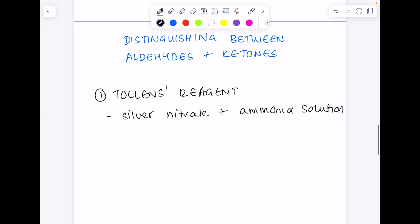So Tollens reagent is a mixture containing silver nitrate and ammonia solution. Now, what's actually happening with the Tollens test is that the aldehyde, this is the chemistry of what's happening, is oxidized to form a carboxylic acid, and it's the corresponding carboxylic acid.